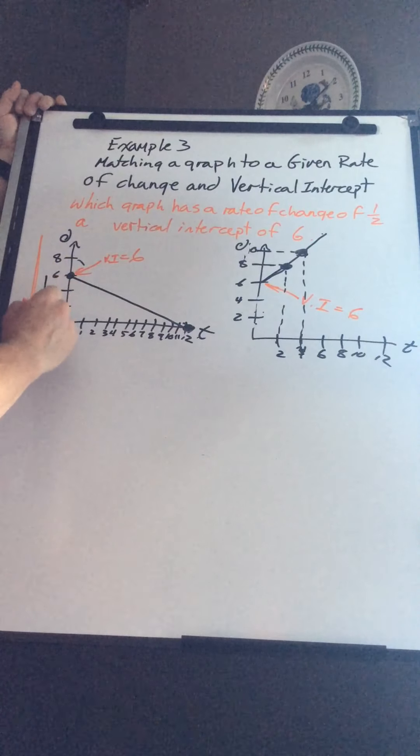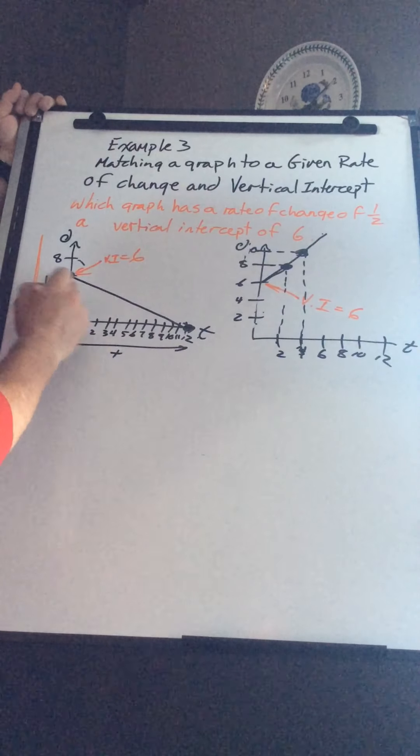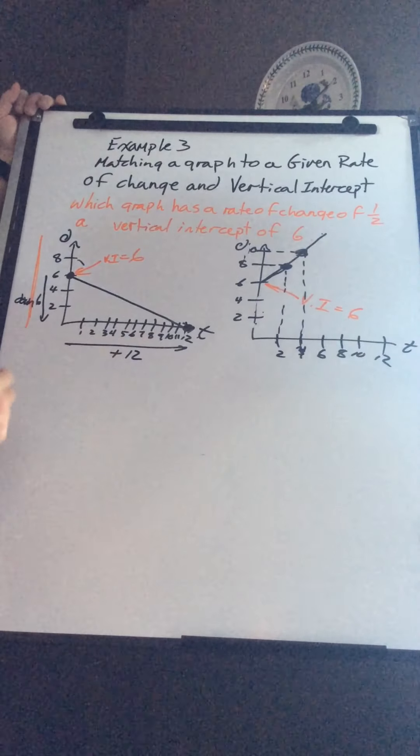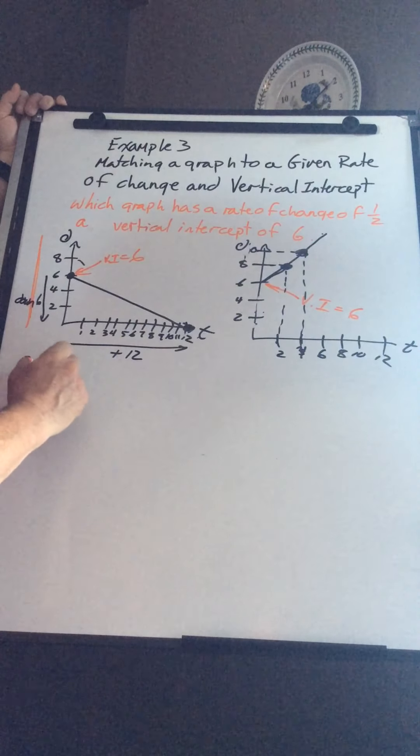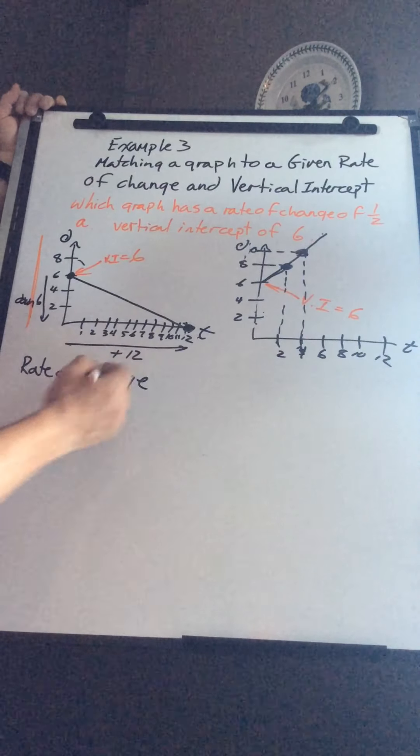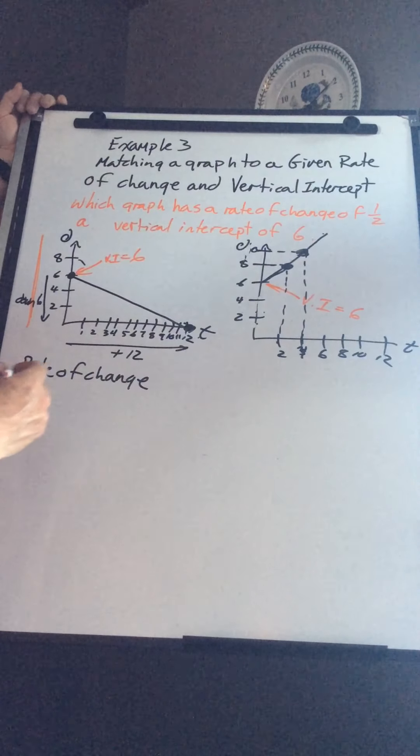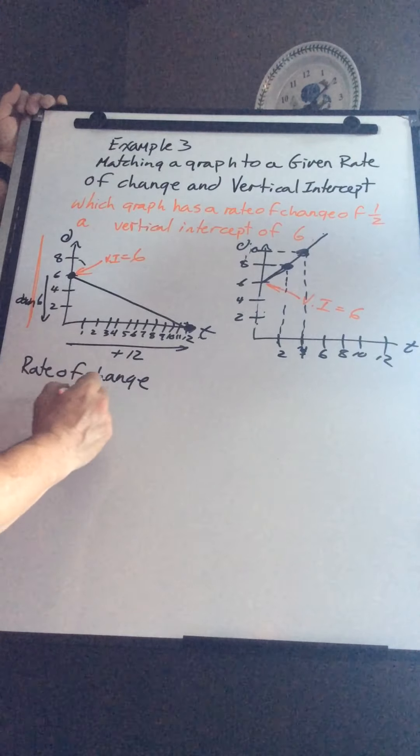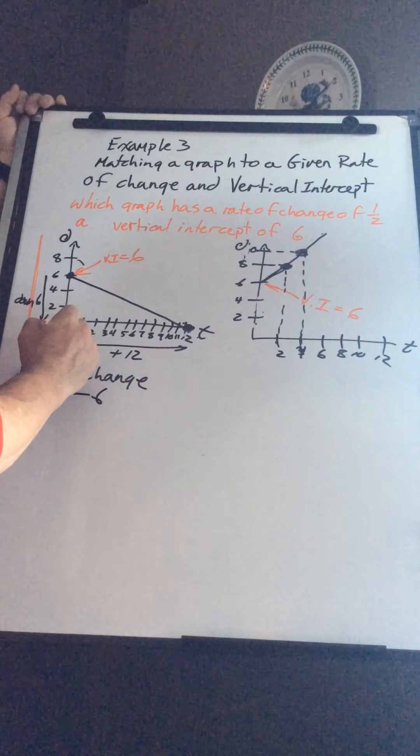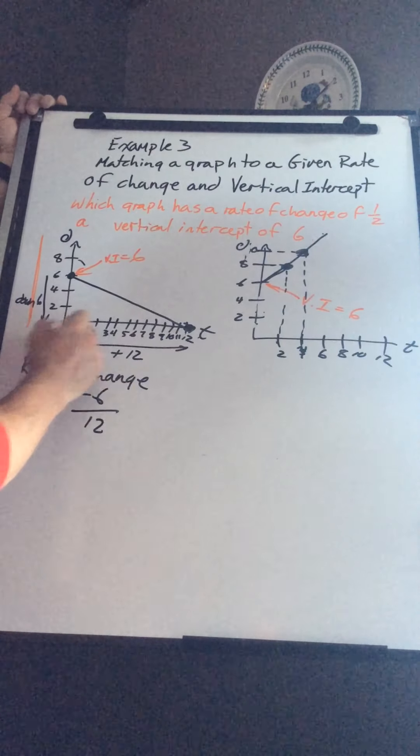I go down six. When I go over, so that's negative six, over 12. So my rate change here, which in this case it's a distance and time question, so my speed is going to be negative six, down six, positive 12. I'm going from zero to 12, six to zero.